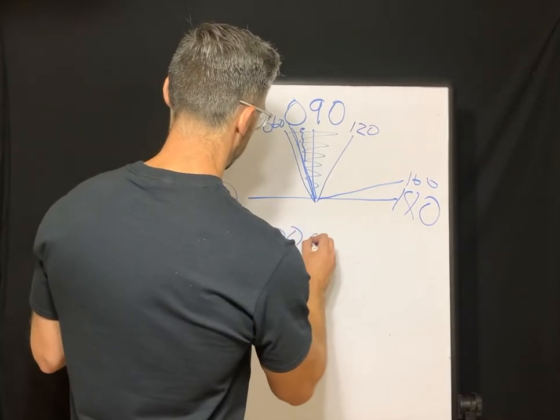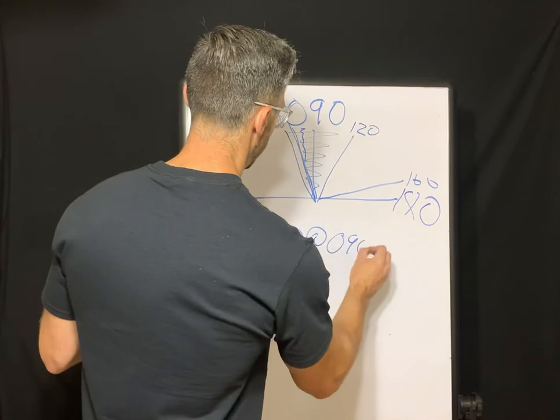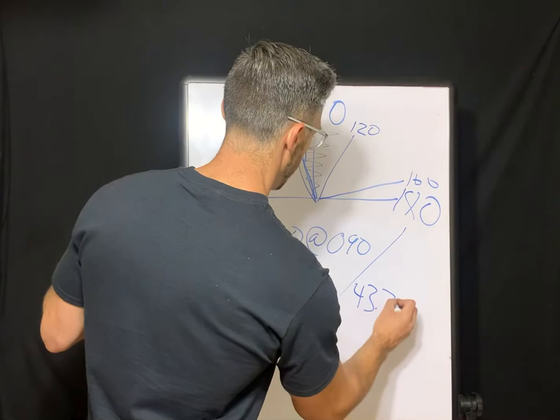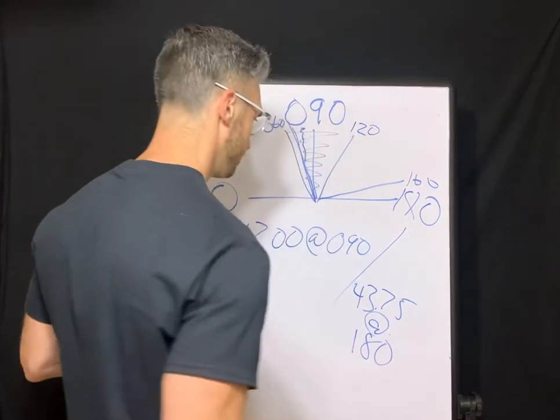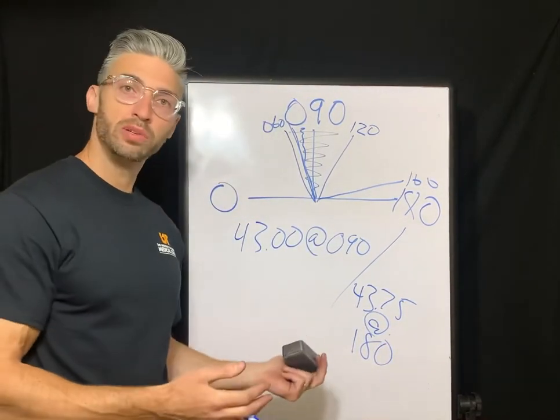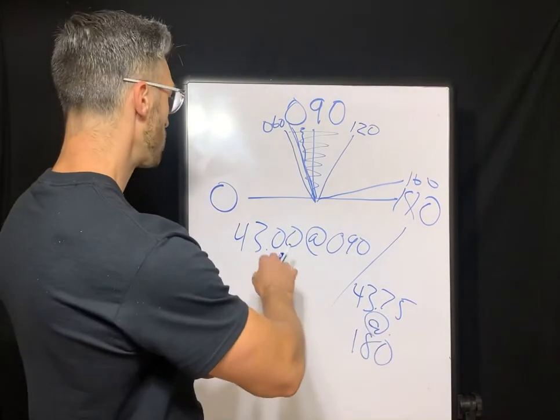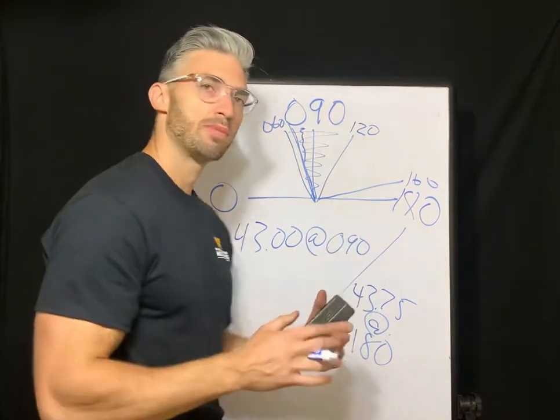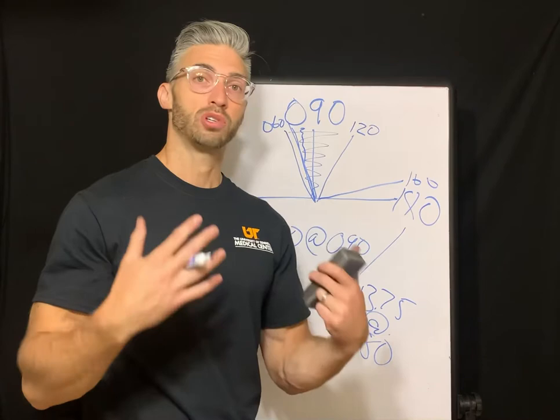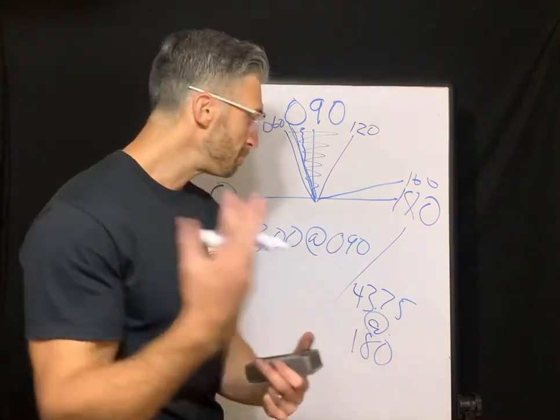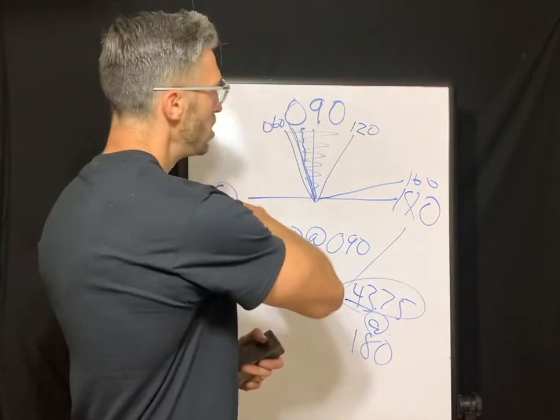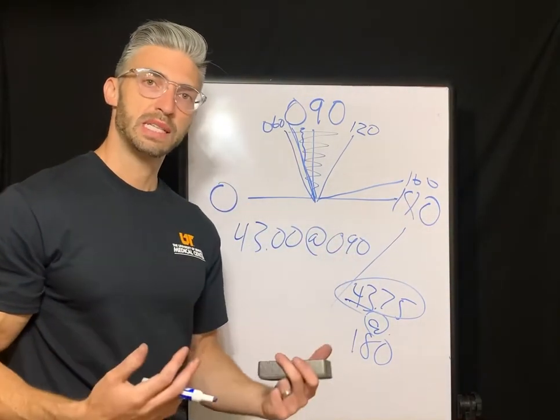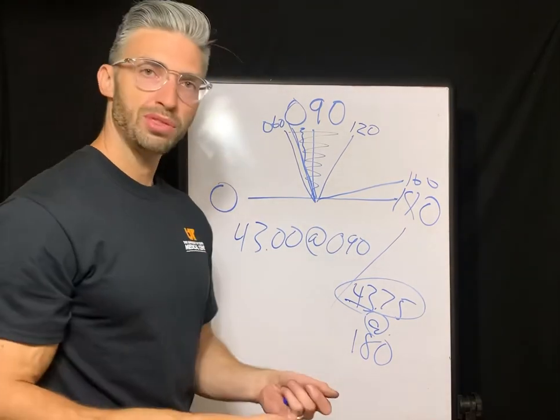And this is so foundational for your NCLE exam. If you can get this down, you can work through so many questions. So my encouragement is if you don't have a grasp on this, just to keep studying this principle. And it's really going to help you. So K readings for against the rule, 43 at 90. We're just going to make it steeper at 180, 43.75 at 180.